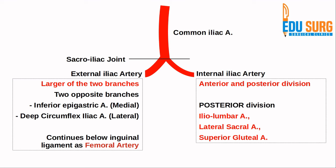Coming to the internal iliac artery, it has two main divisions: the anterior and the posterior division. The branches of the posterior division are easy to remember: the iliolumbar artery, the lateral sacral artery, and the superior gluteal artery. A useful mnemonic is PILS or SLIP, whichever way you prefer to remember it.